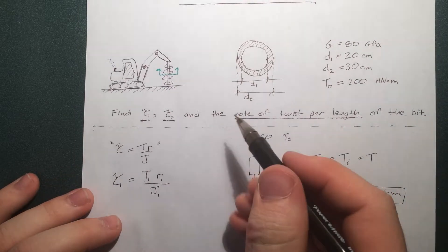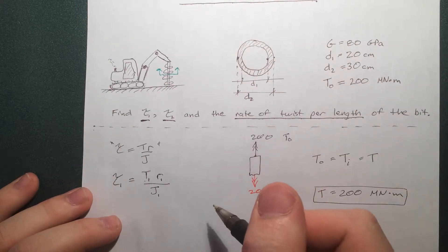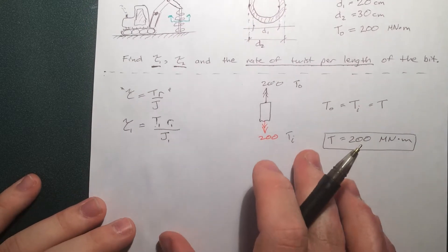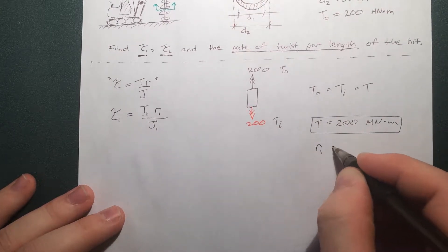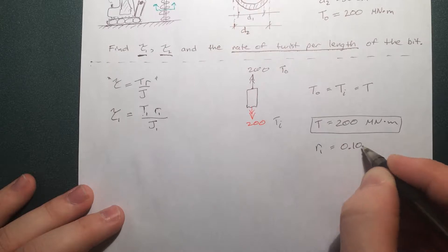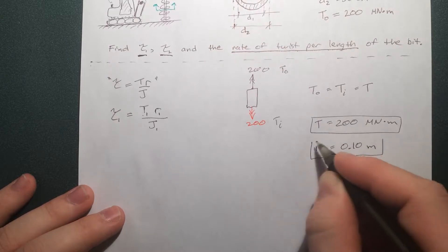Radius. Now we're given that diameter. It's 20 centimeters, so the radius is 10 centimeters. Or we could say the radius of 1 is 0.10 meters.